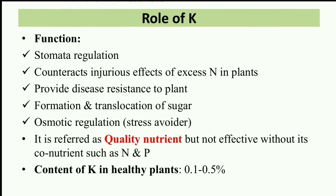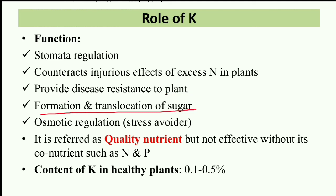Now we discuss the role of potassium. Potassium plays a role in stomata regulation — it regulates the opening and closing of stomata. It also counteracts the injurious effects of excess nitrogen in plants. When nitrogen becomes too high, potassium plays a role in contracting those injurious effects. Potassium provides disease resistance and helps in the formation and translocation of sugar in plants.